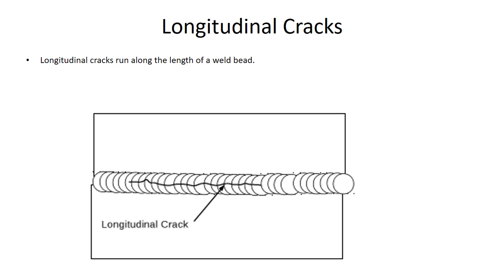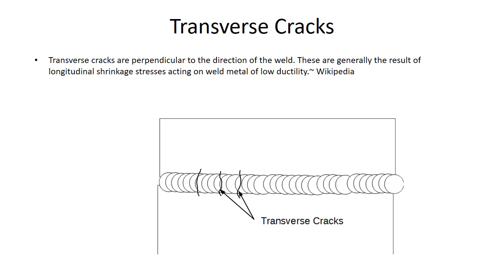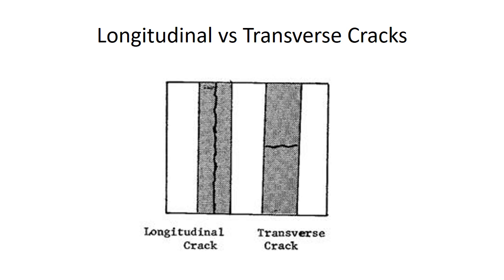Here we can see a longitudinal crack. A longitudinal crack runs along the length of the weld bead. Transverse cracks are perpendicular to the direction of the weld and are generally the result of longitudinal shrinkage stresses acting on weld metal of low ductility. Here's a sketch from a Department of Transportation welder inspector training guide showing the difference between a longitudinal and a transverse crack side by side. The longitudinal crack runs longitudinally and the transverse crack runs across the weld.